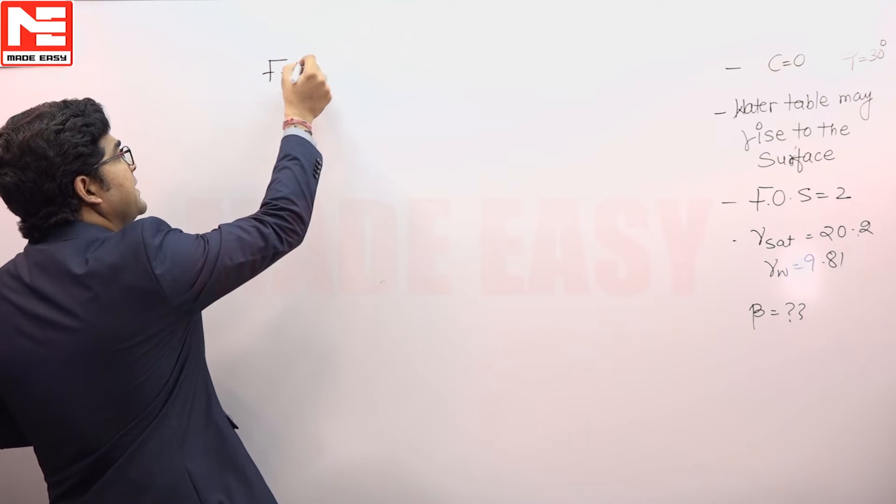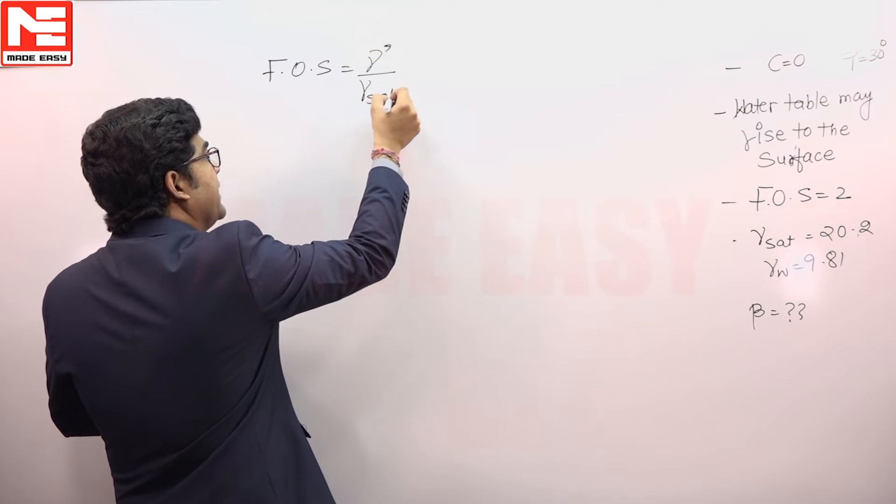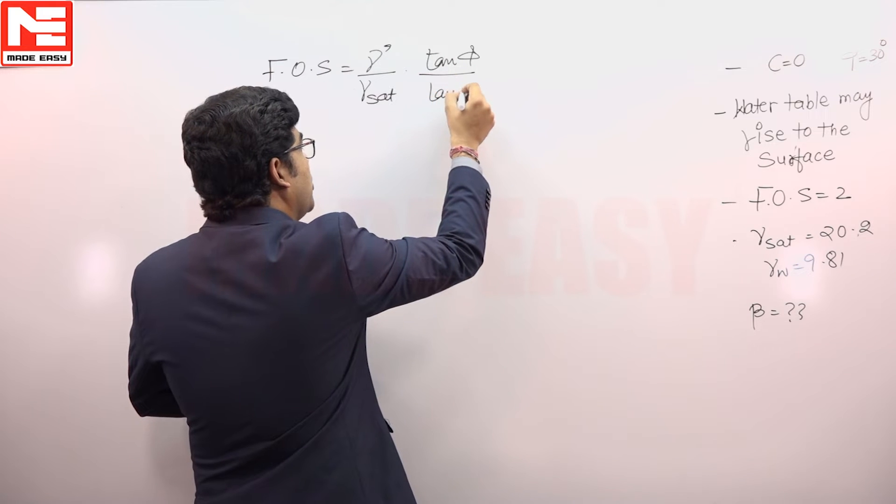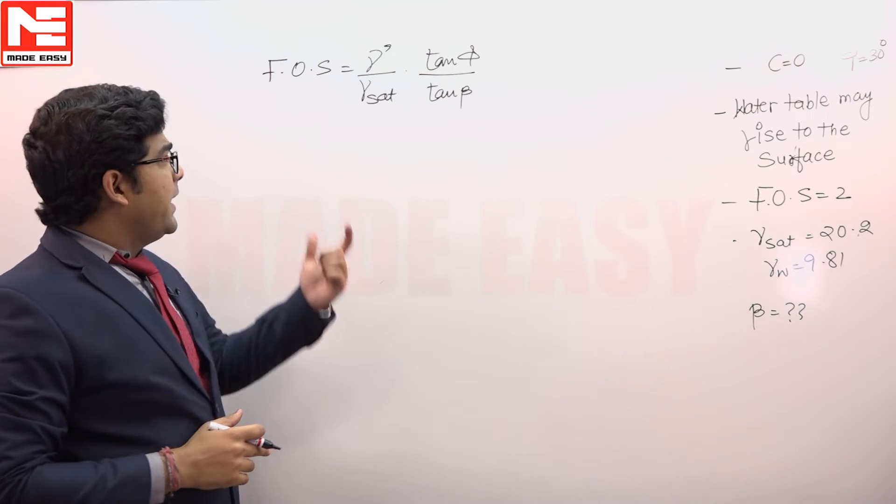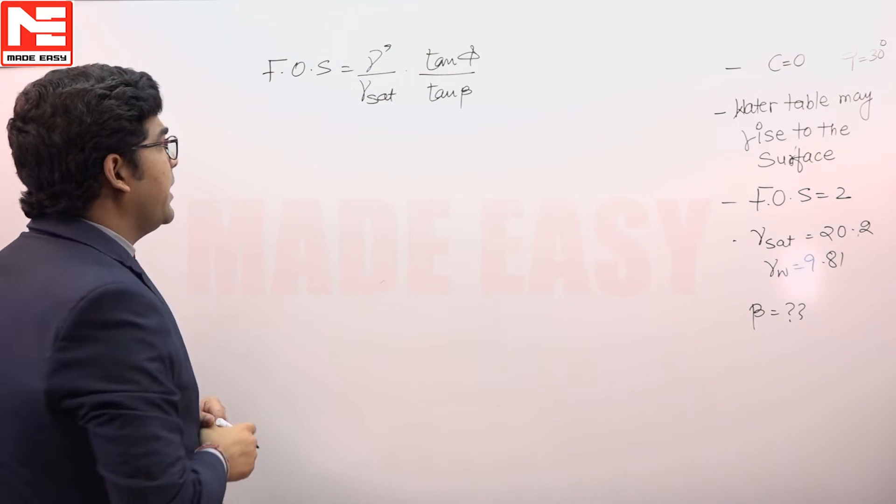the factor of safety in this case will be equivalent to gamma submerged divided by gamma saturated times tan phi by tan beta. Why? Because the slope is cohesionless. In this case, this FOS will be gamma submerged divided by gamma saturated times tan phi by tan beta.